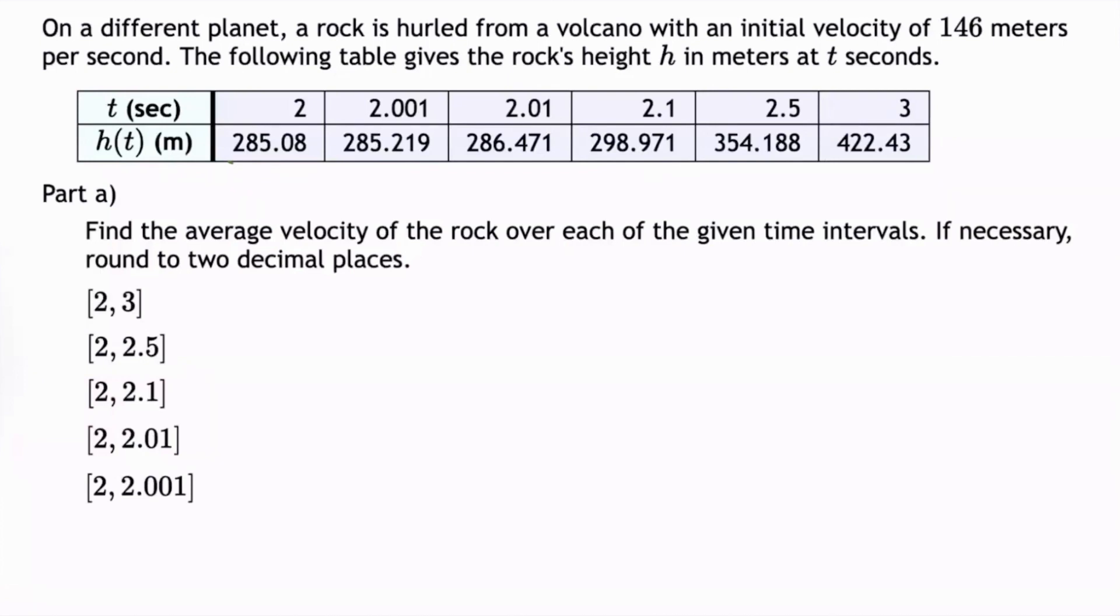Okay, let's work through another problem together. On a different planet, a rock is hurled from a volcano with an initial velocity of 146 meters per second. The following table gives the rock's height h in meters at t seconds.